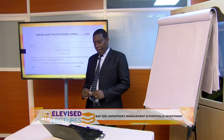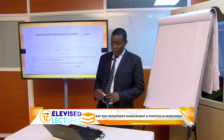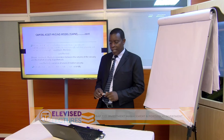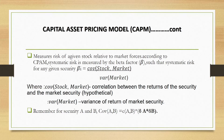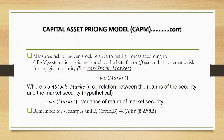The CAPM, or Capital Asset Pricing Model, measures the risk of a given stock relative to the market forces. According to it, assuming a security i, the beta factor will be beta-i, which mathematically is given by COV(stock, market) divided by VAR(market). What do those abbreviations mean?